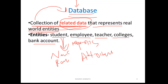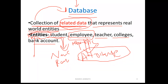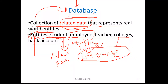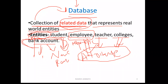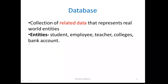These properties are called attributes. In a database, entities have different attributes. For example, a teacher has many attributes. A college has attributes like name, city, courses, number of courses. A bank account has attributes like account number, IFSC code, branch name. Student, employee, teacher, and colleges are all examples of entities.